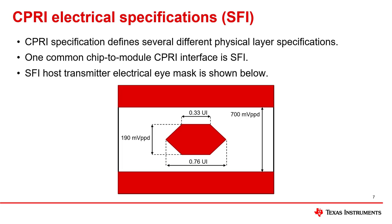Another important consideration when selecting a signal conditioner for a CPRI application is the target electrical specifications. The CPRI specification defines several different physical layer specifications for various optical and electrical connections. The electrical physical layer specification section of the CPRI standard has details on which specifications are supported. One chip-to-module electrical interface commonly used for CPRI is the SFI specification. As an example, we are showing the SFI host transmitter electrical spec. When selecting a signal conditioner, it's important to ensure it can meet the CPRI electrical specification. A signal conditioner with a minimum transmit amplitude of 900 millivolts peak-to-peak differential would not be suitable for SFI, since the SFI spec establishes a maximum amplitude of 700 millivolts peak-to-peak differential.